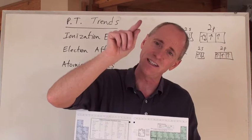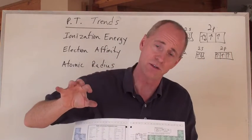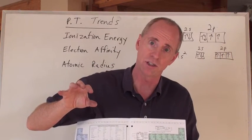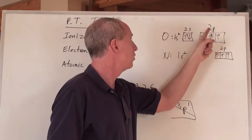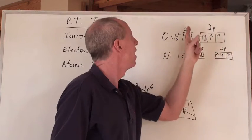But then oxygen, there's actually a little dip, and it's not as hard to remove the outermost electron in oxygen. You want to know why? Because oxygen looks like this, right? 1s2, 2s2, 2p4.